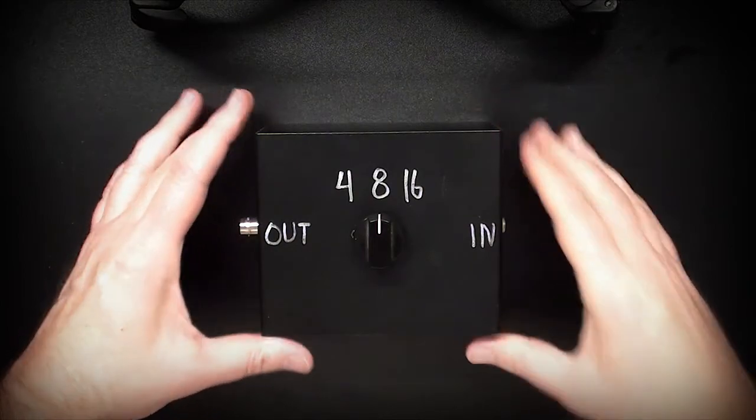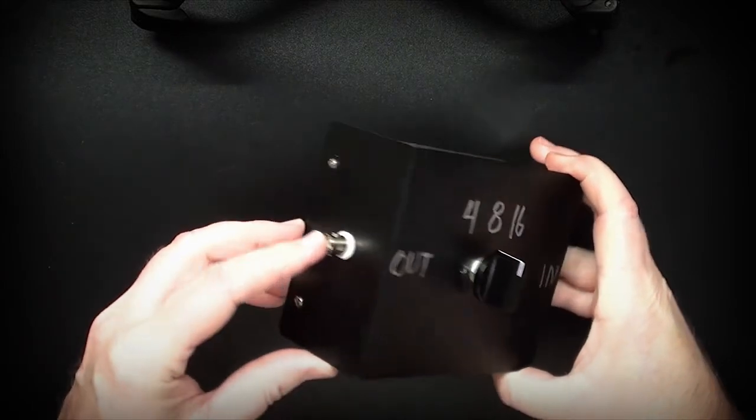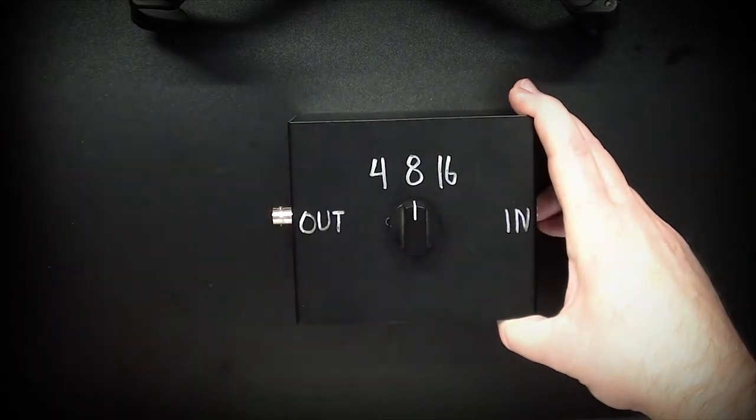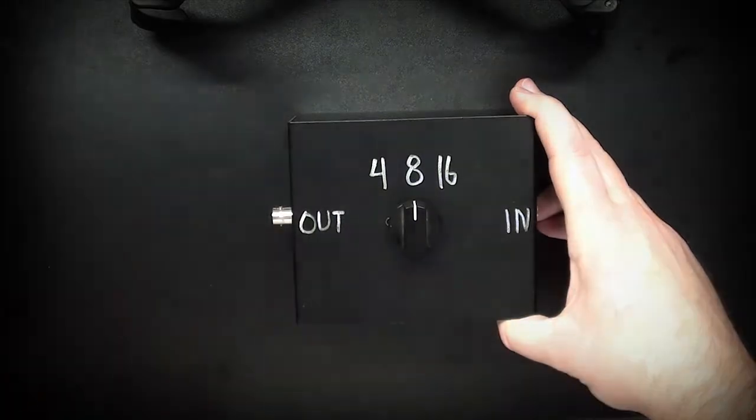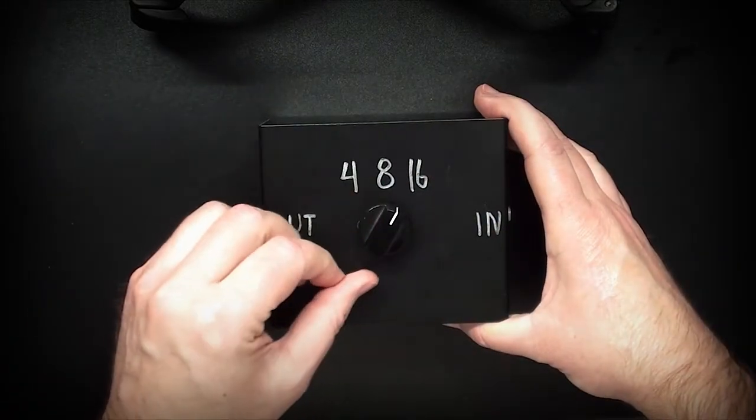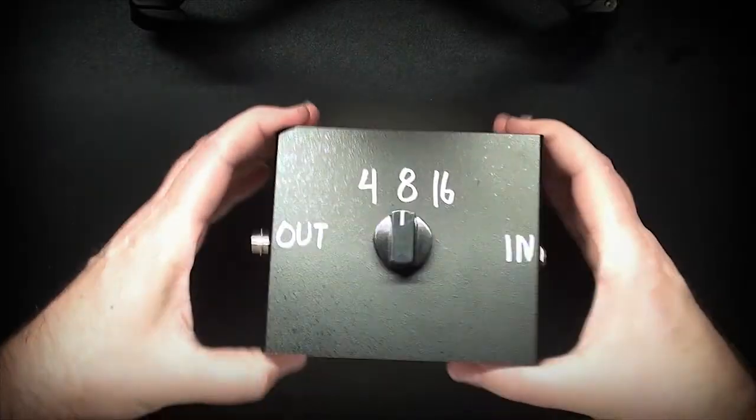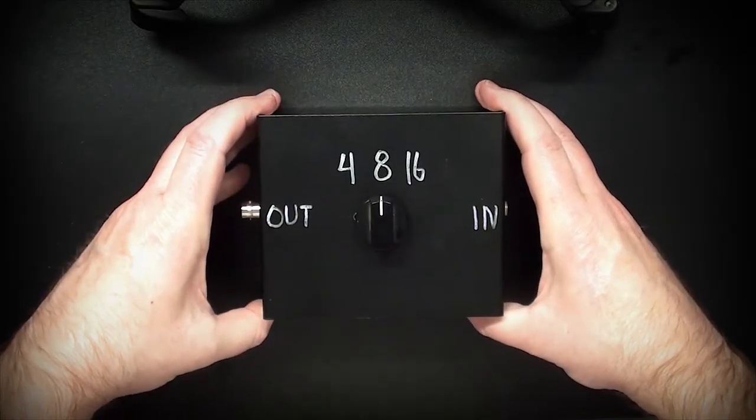We've got the input, and this is a BNC connector output that goes to the scope via this cable. We have the impedance load switch - 4, 8, or 16 - and then the case. So let's see what's inside.